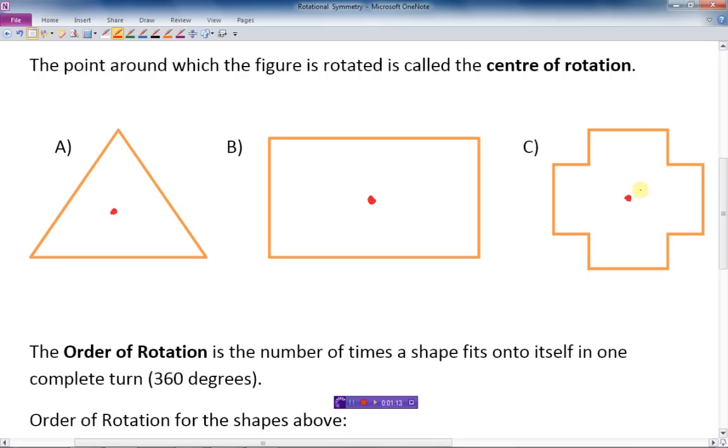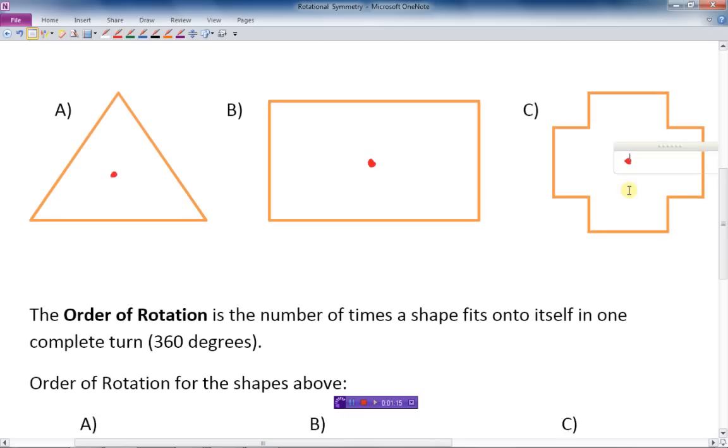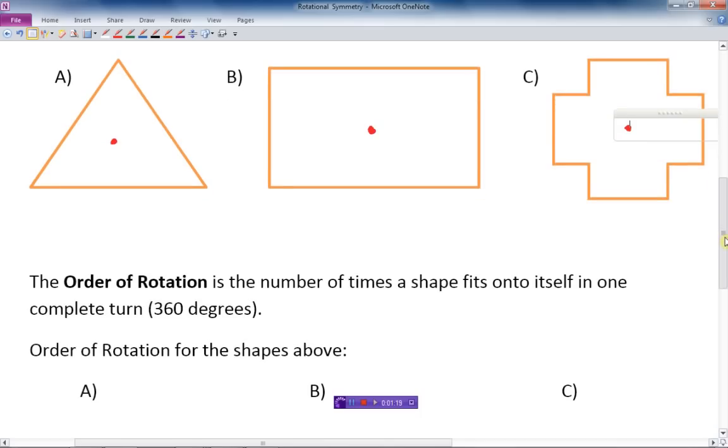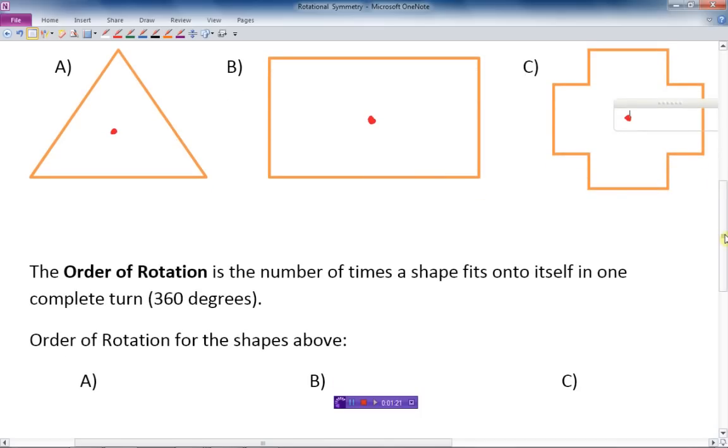Now the order of rotation is the next expression we need to look at, and this is very important. The order of rotation is the number of times a shape fits onto itself in one complete turn.